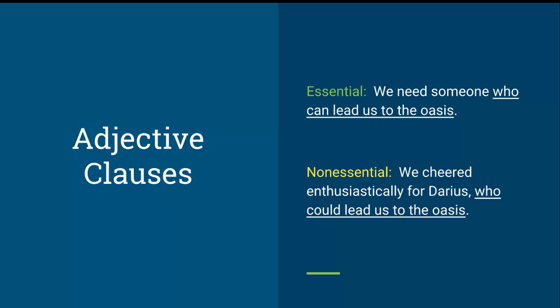Let's look at one more type: adjective clauses. Essential example: 'We need someone who can lead us to the oasis.' If we take out the adjective clause, the sentence reads 'We need someone' — to do what? That clause is essential, so no commas. Non-essential example: 'We cheered enthusiastically for Darius, who could lead us to the oasis.' We know the important information — Darius. The extra clause 'who could lead us to the oasis' just gives more detail. We could take it out and the sentence still makes sense, so we do use a comma before the phrase.